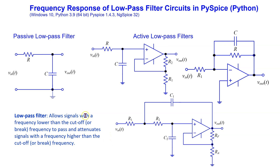The cutoff frequency depends on the values of the resistor and capacitor. For active filters which use an op-amp, we will use the popular 741 op-amp model.